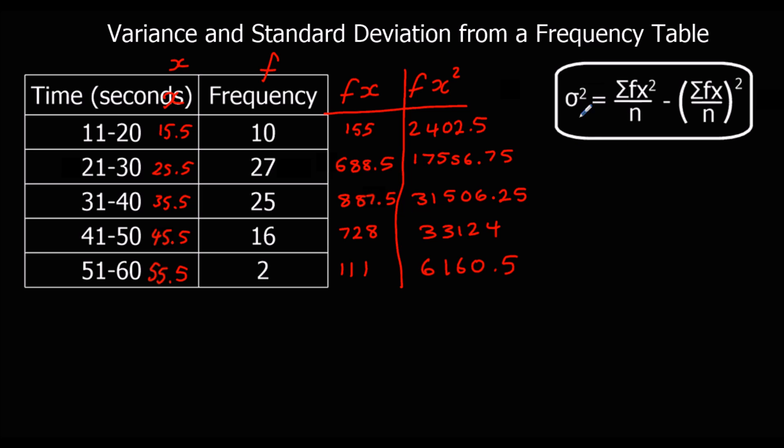So now we just need to work out the sums. The sum of the frequency, if we add up the frequency column, will give us our n. The sum of the fx will give us sum of fx. And the sum of the fx squareds will give us sum of fx squared. So we're just going to use the calculator to add up these numbers. So n is 80. Sum of fx is 2570. And the sum of fx squared is 90750.